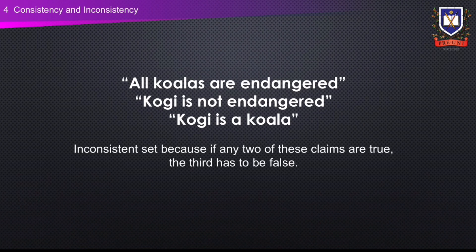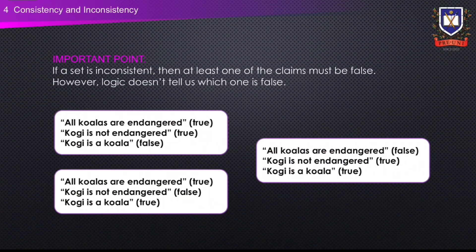'All koalas are endangered,' 'Kogi is not endangered,' and 'Kogi is a koala' is an inconsistent set because one claim has to be false if the other two are true. It's important to note that if a set is inconsistent, then at least one of the claims must be false. However, logic doesn't tell us which one is false. Here are the three possible false statements from the previous example.